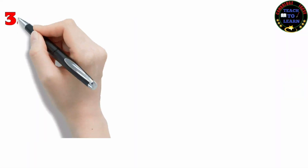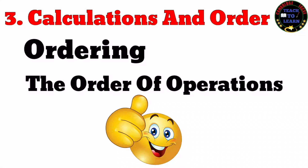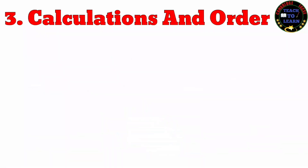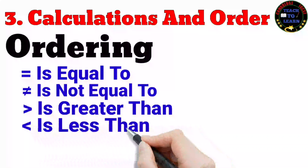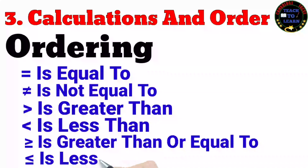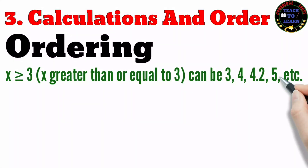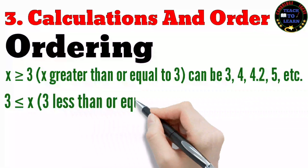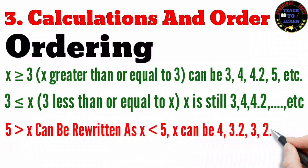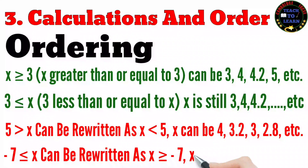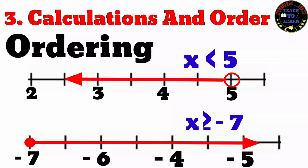Topic three: calculations and order. In this topic we are learning about ordering and the order of operations. The following symbols have specific meaning in mathematics: is equal to, is not equal to, is greater than, is greater than or equal to, is less than, is less than or equal to. For example, x ≥ 5 or 5 > x can be written as x < 5. On a number line, −7 ≤ x means x ≥ −7, where x can be −7, −6, −5, and so on.